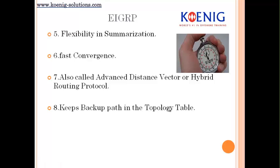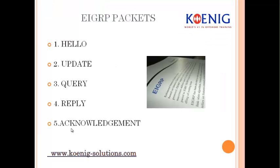EIGRP keeps a backup path in the topology table and maintains three main tables. First is the neighbor table, which is simply the list of neighbors from a router's perspective, viewable with the 'show ip eigrp neighbors' command. Second is the topology table, which lists all possible paths to reach a particular destination, including both the primary path (called the successor) and the backup path (called the feasible successor). The routing table contains only the best paths.